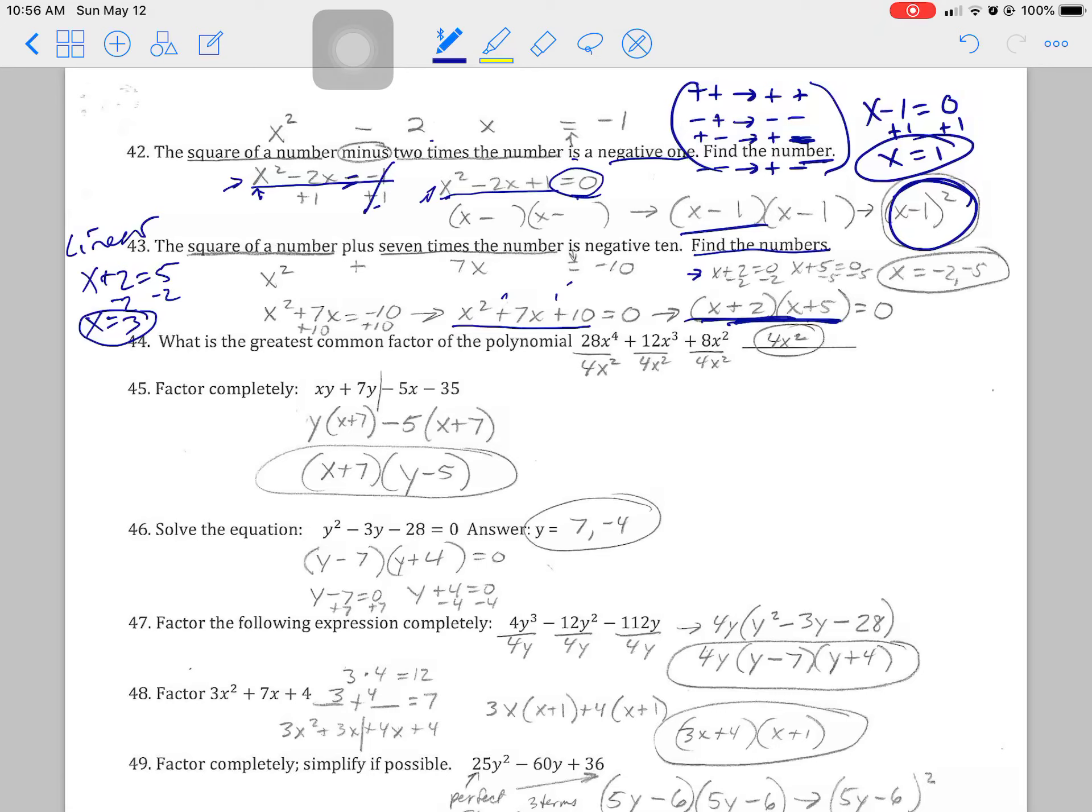So here I'm here. And then I set each factor to equal to 0. x plus 2 is a factor. x plus 5 is another factor because they are multiplied together. Factors are items that are multiplied together. So we set each one to 0 and then we solve the linear equation that we have now for x and we have two answers.